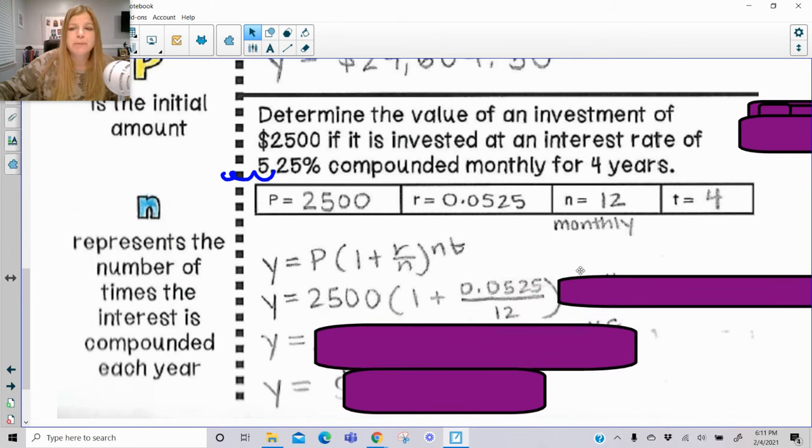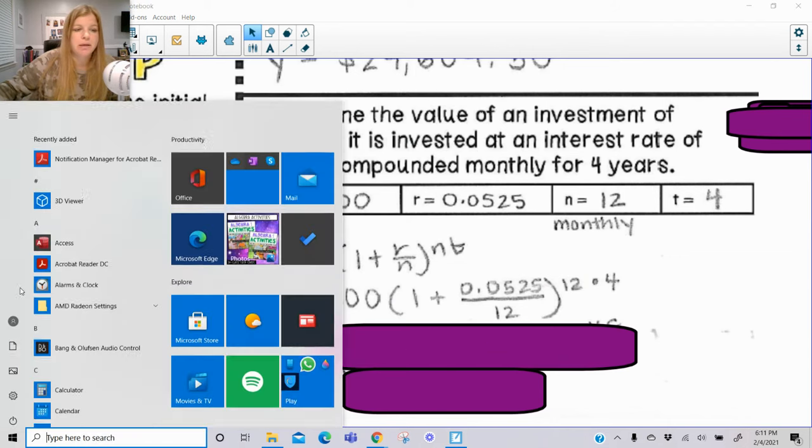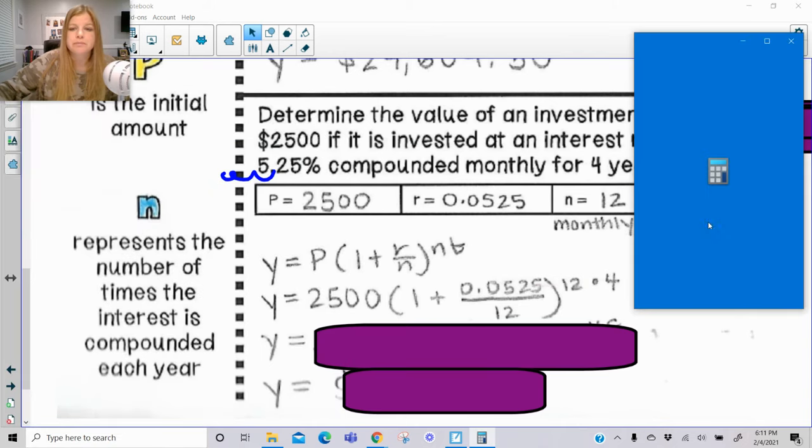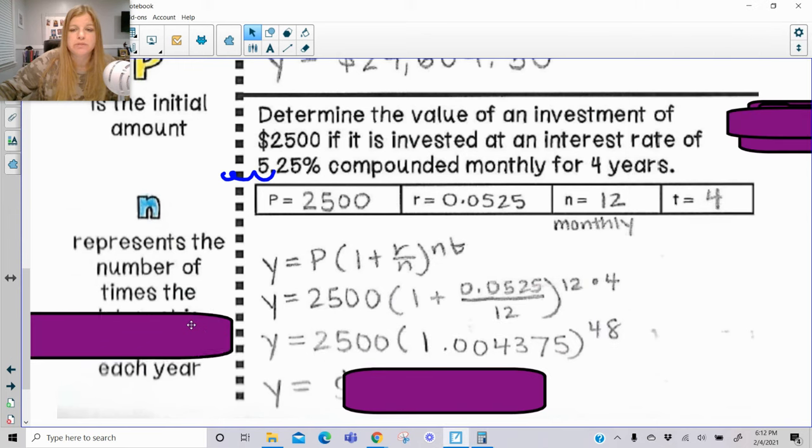And then my exponent is n times t, so 12 times 4. Okay. Now, something we can start to simplify out here, let me bring my calculator back up, is I can simplify what's in my parentheses. So 0.0525 divided by 12. So do the division part first, then add 1. So the expression here that's in the parentheses, do the division first, add 1. I'm going to copy this number down, because it's not a crazy number. And then my exponent 12 times 4 is, of course, 48.